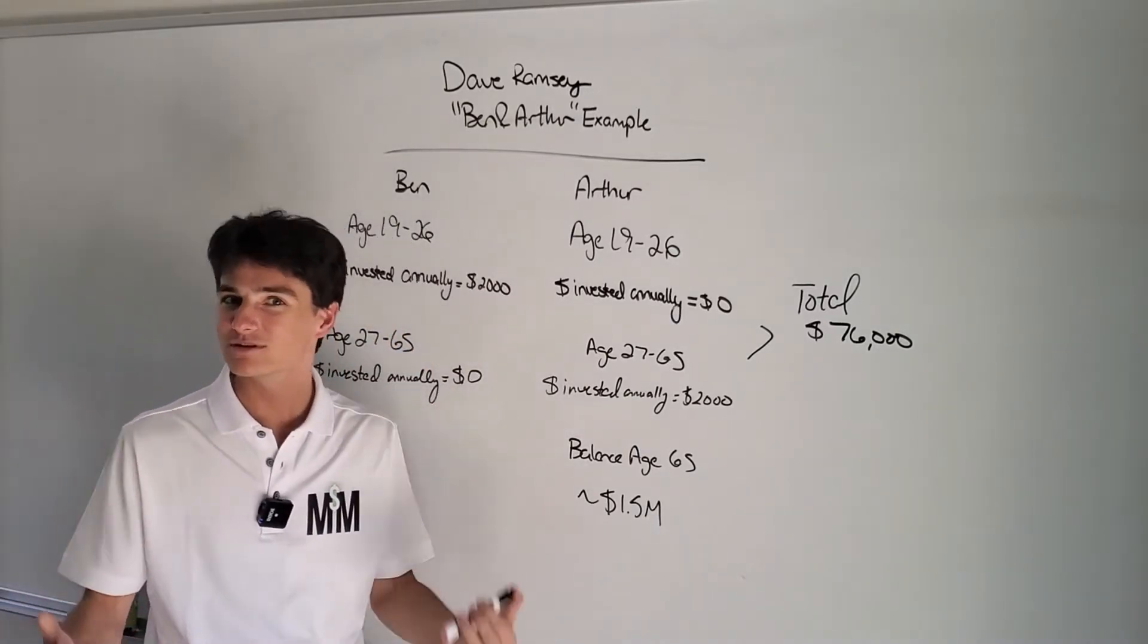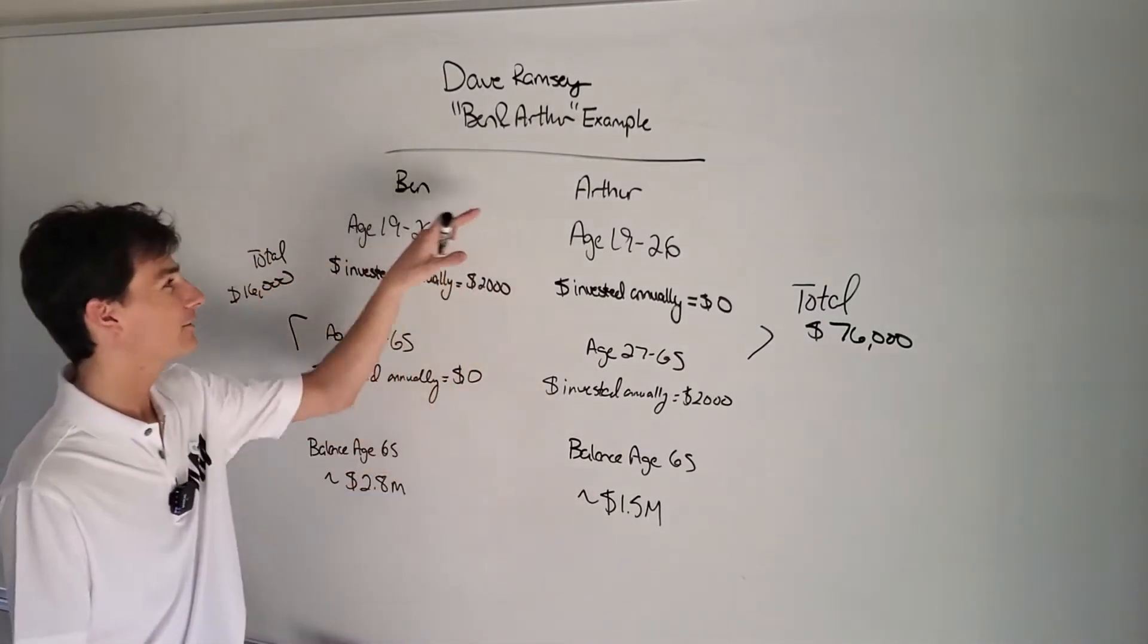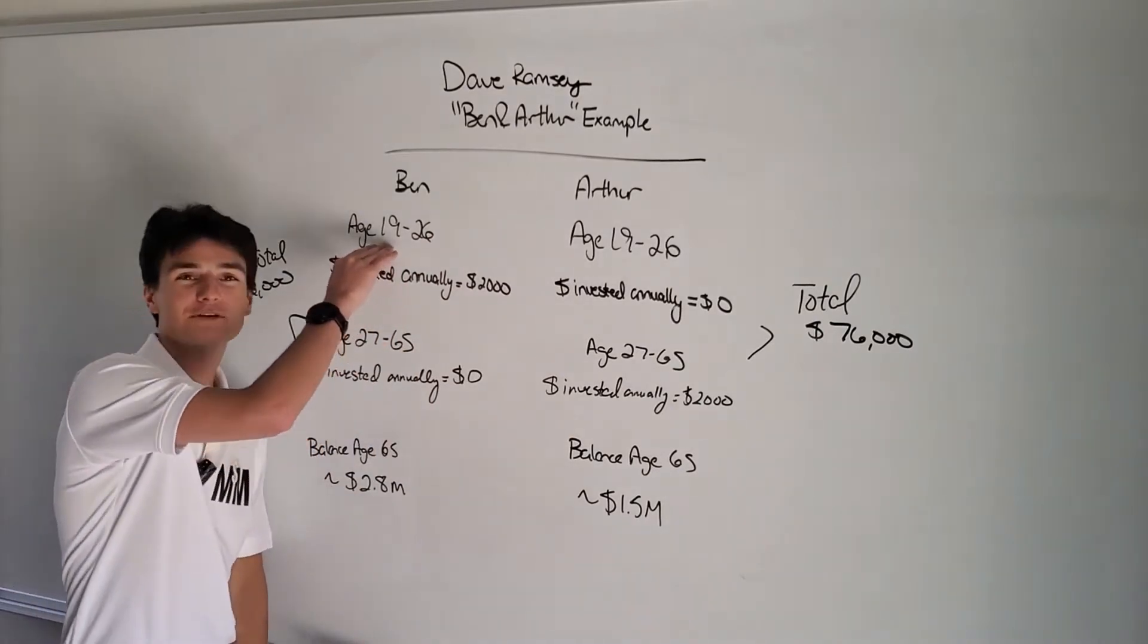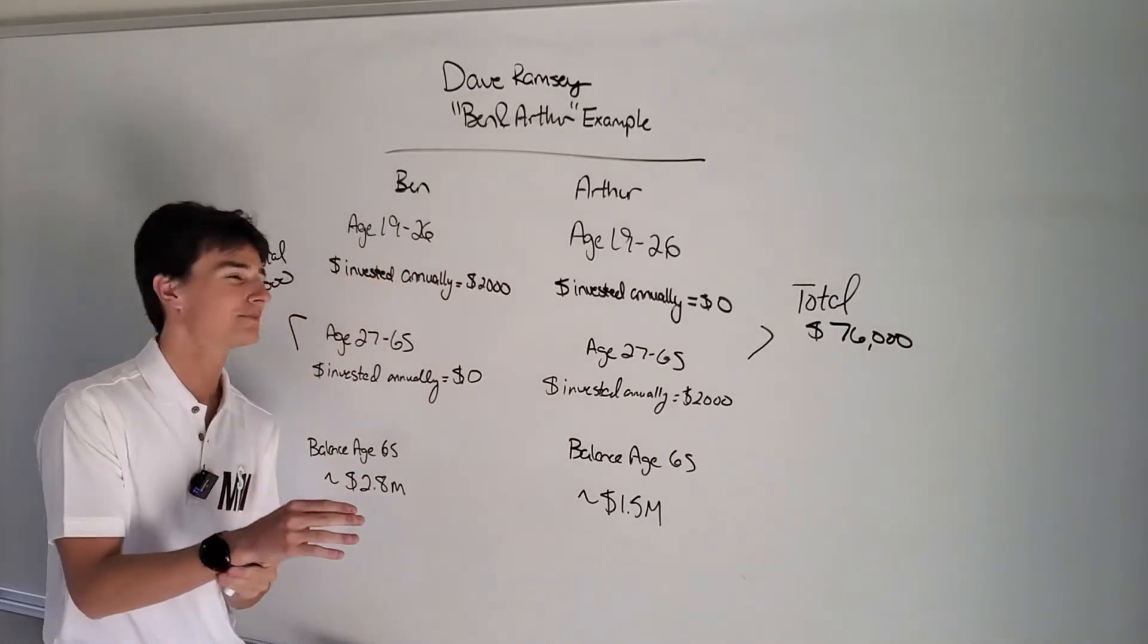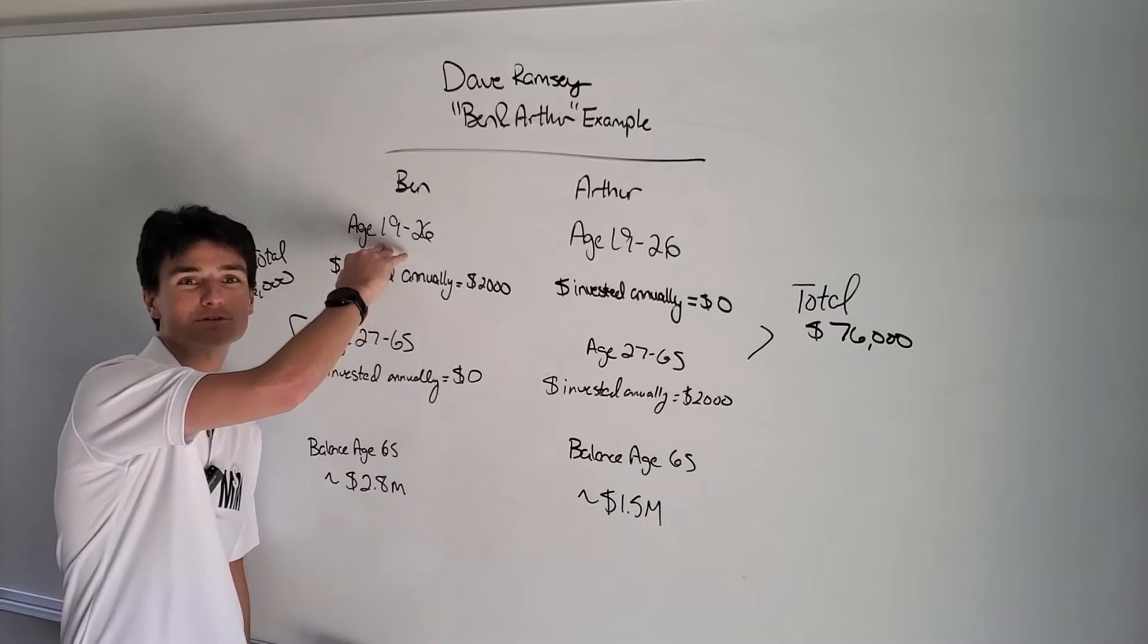It's called the Ben and Arthur example. We have two different individuals. We have Ben and Arthur, both starting out at 19 years old.